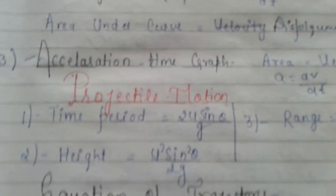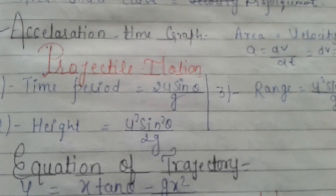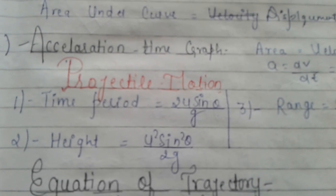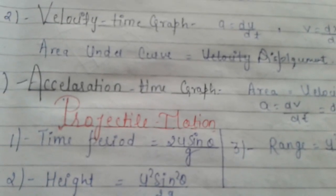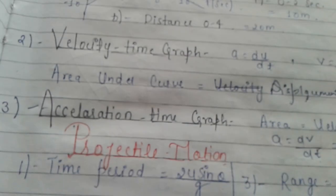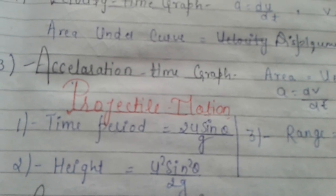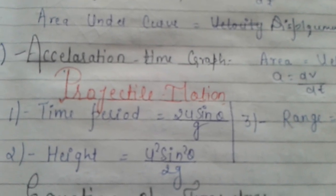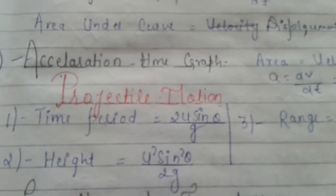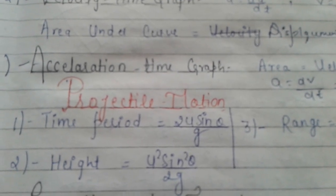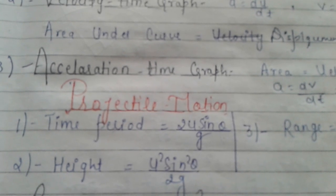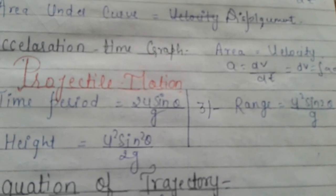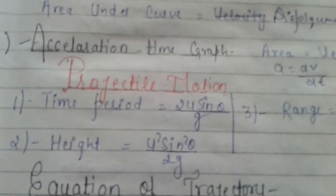The third major topic is projectile motion. The time of flight — how much time it takes to complete the whole journey — is given by the formula T = 2u sinθ / g. The maximum height formula is H = u² sin²θ / 2g. The range formula is R = u² sin2θ / g.